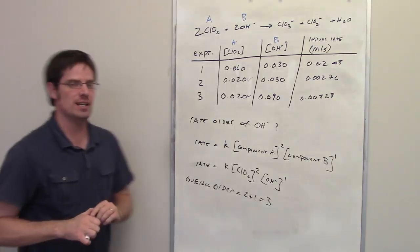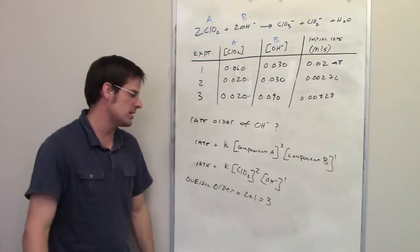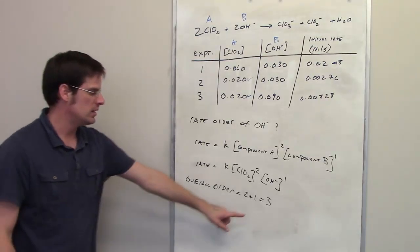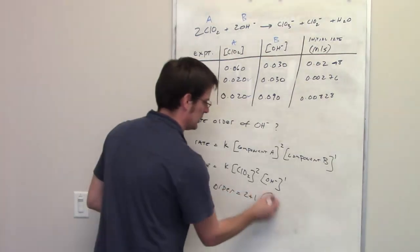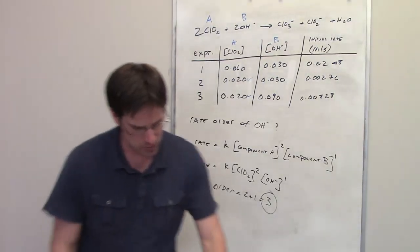We would say that this reaction is second order with respect to chlorine dioxide, first order with respect to hydroxide, and the overall order is 3. So the answer to that question is 3. Now, we're going to take a look at the next question.